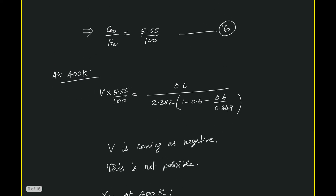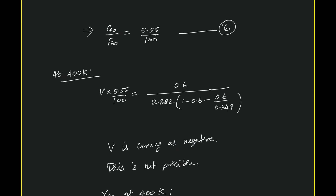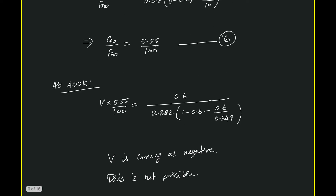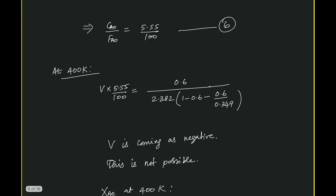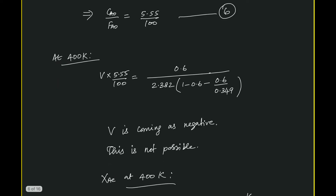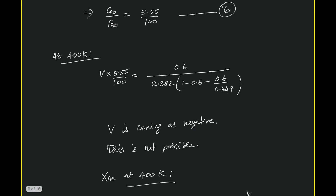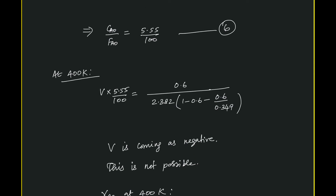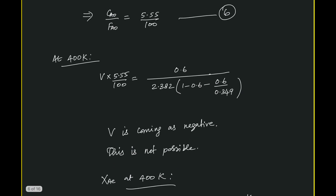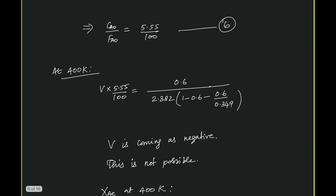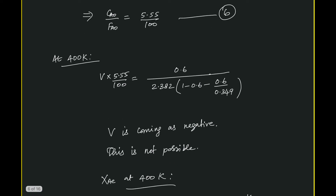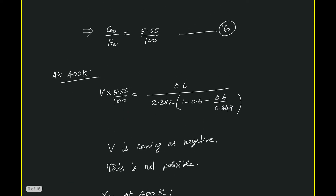Since the equilibrium conversion at 340 Kelvin (67.3%) exceeds our target of 60%, we will get a positive volume. We obtain the forward rate constant K1 at 340 Kelvin from the available expression. Substituting into the design expression with Ca0/Fa0 = 5.5/100, the volume comes out to 99.42 liters — nearly the same as the 100 liters at 300 Kelvin. This indicates that despite the change in temperature, the net rate is nearly the same.